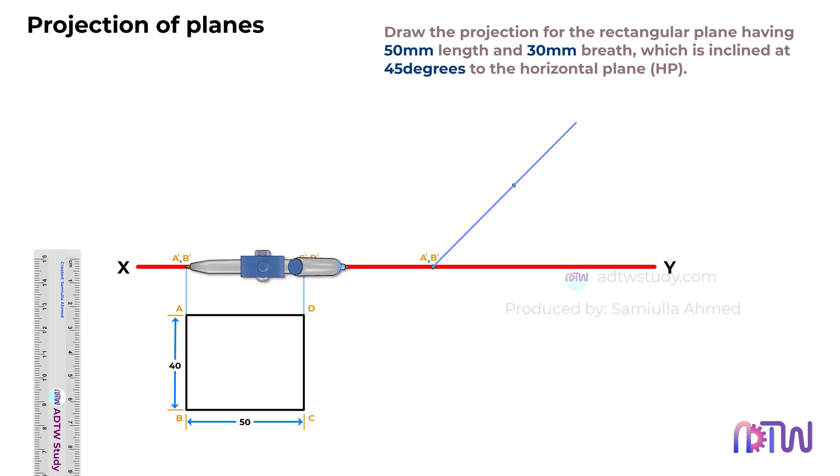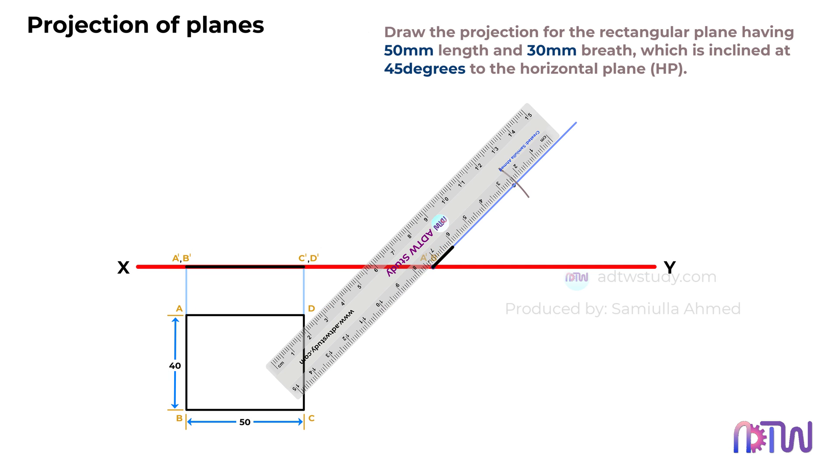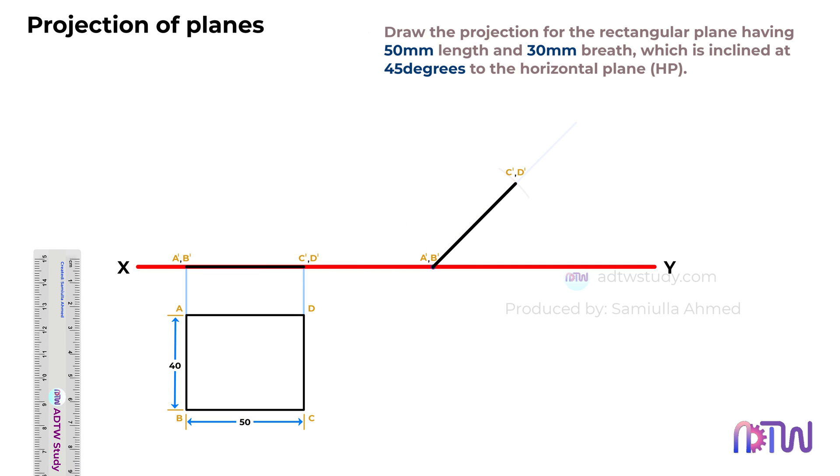Then, take a compass and adjust it to match the true length of the rectangle in the front view. Place the compass at the point you marked earlier, and draw an arc as demonstrated. Finally, draw a line intersecting this arc. This line represents the true length of the rectangle, now inclined at a 45 degree angle. This step is crucial for accurately portraying the orientation of the rectangle as per the given specifications.